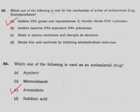Which one of the following is true for the mechanism of action of an antibacterial drug? For fluoroquinolones, the correct answer is option A: it inhibits DNA gyrase and topoisomerase 2 activity, therefore it blocks DNA replication.